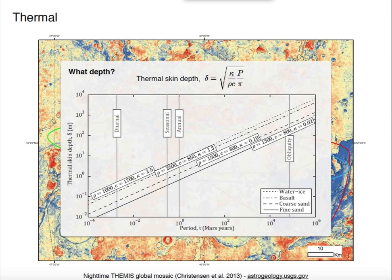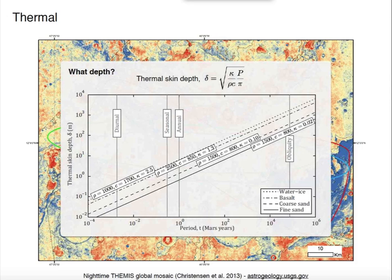The thermal signature is responsive only to the thermal skin depth when looking at the difference between day and night brightness temperatures. On a diurnal timescale, that really corresponds to the top maybe 10 centimeters. The variety of depths for typical materials is not actually that big — you're really looking at only the top few tens of centimeters on diurnal timescales. That's a consideration when looking at thermal data, because it might not correspond to the underlying geology, just the overburden of sand or dust.